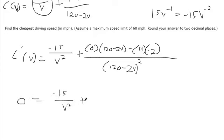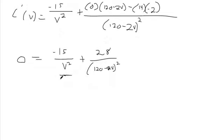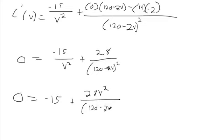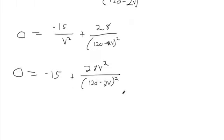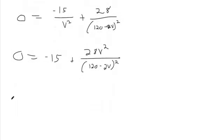The rest is just algebra. Negative 14 times negative 2 makes 28. If I'm trying to solve for V, my first goal would be to get it out of the denominator. I'm going to multiply both sides by V squared. That gets rid of V squared in the denominator and gives us 28V squared. Then I still need to get V out of the denominator, so I'm going to multiply both sides by 120 minus 2V squared.